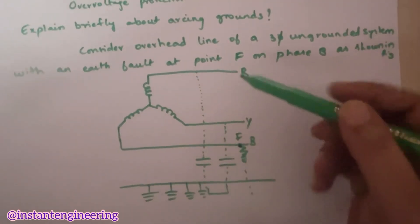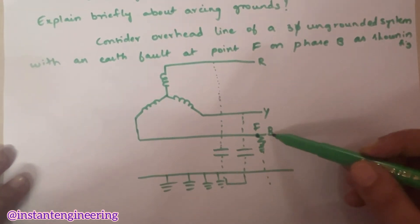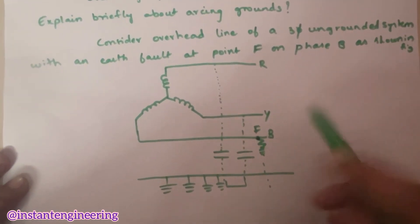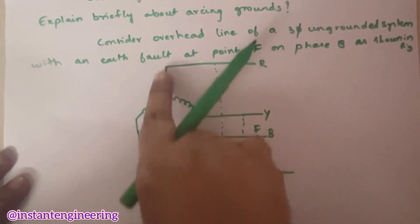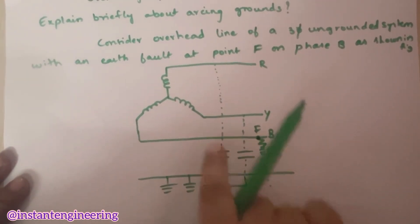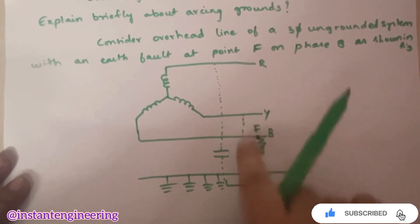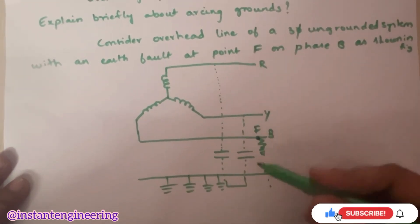Now, this is a three-phase network R, Y, B. Now, we are telling there is a fault at B, B phase. Now, see, when there is a fault, generally the current will be flowing through this one. Here, I_R current will be going towards its capacitor. Again, here, I_Y and here, I_B current should flow. So, when there is a fault, what happens? The current will discharge directly to the earth.